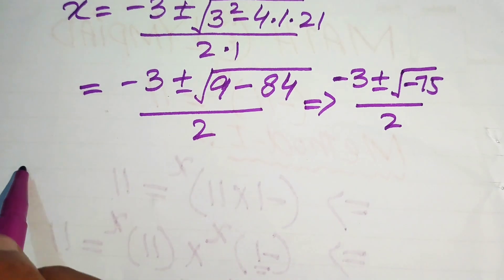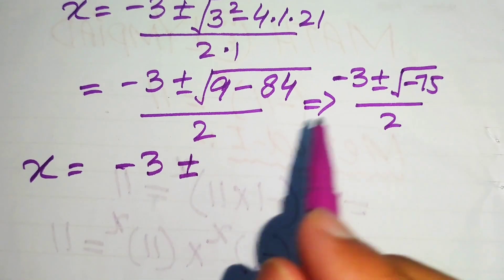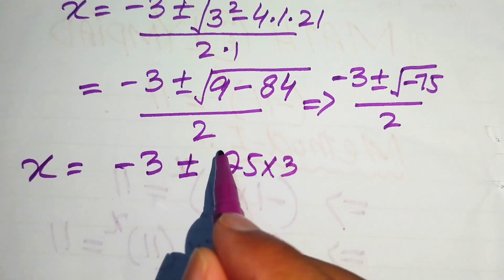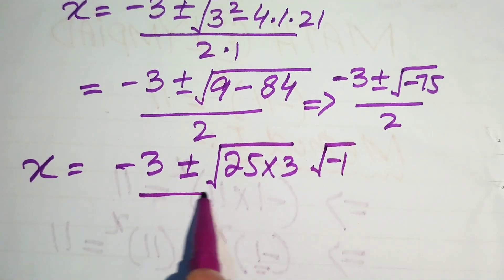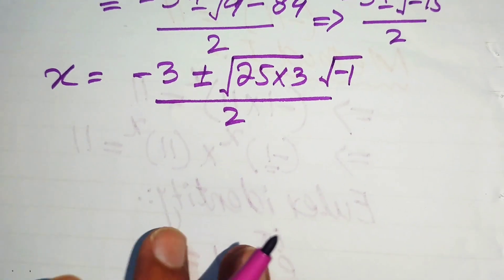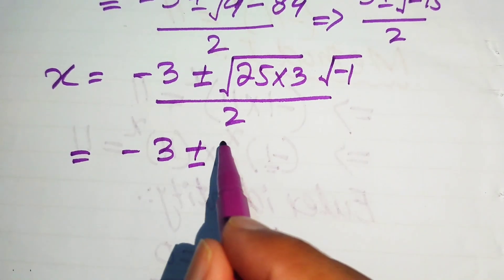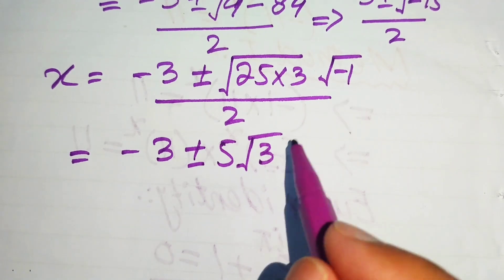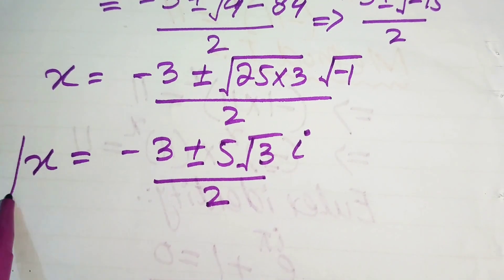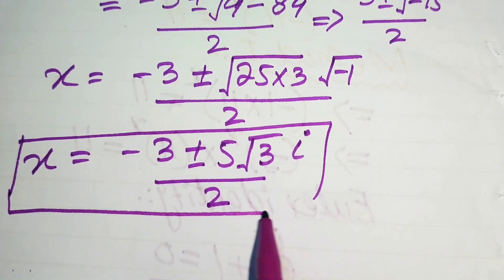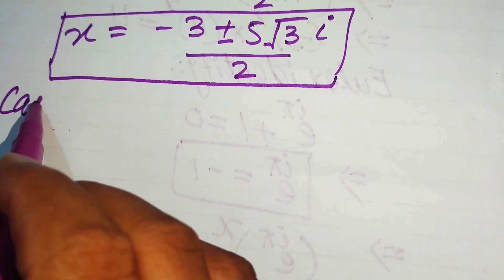We rewrite minus 75 as minus 1 times 25 times 3, so the square root of minus 75 equals 5 times the square root of 3 times iota (where the square root of minus 1 is iota). Therefore the two complex roots from Case 1 are x equals (minus 3 plus or minus 5i√3) divided by 2.